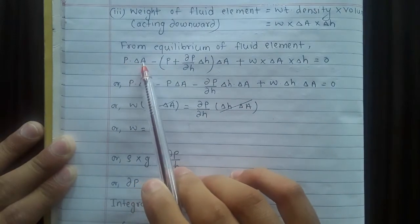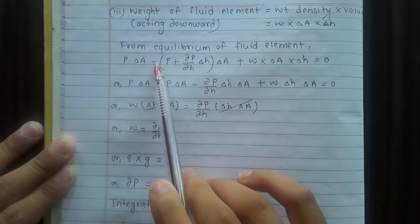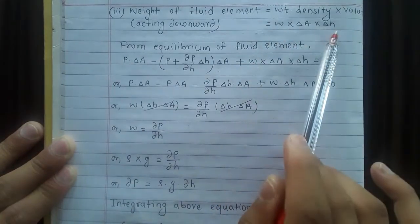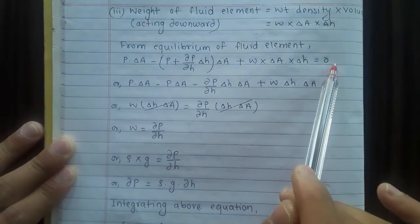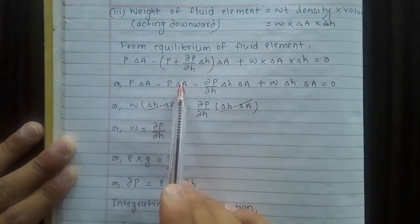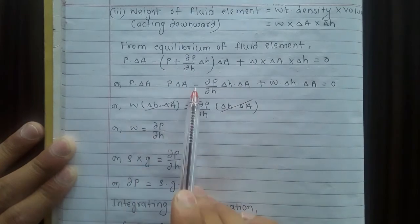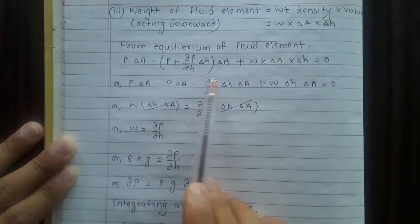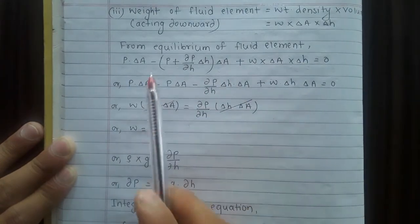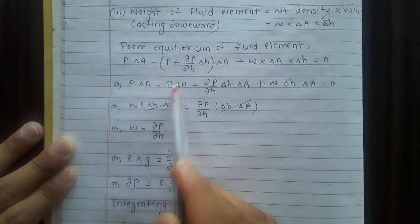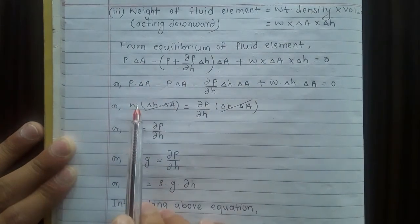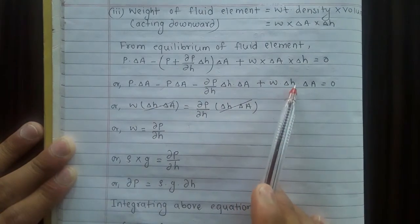P times delta A minus (P times delta A plus dP/dh times delta h times delta A) plus W times delta A times delta H equals zero. Now, this will cancel, then cancel.